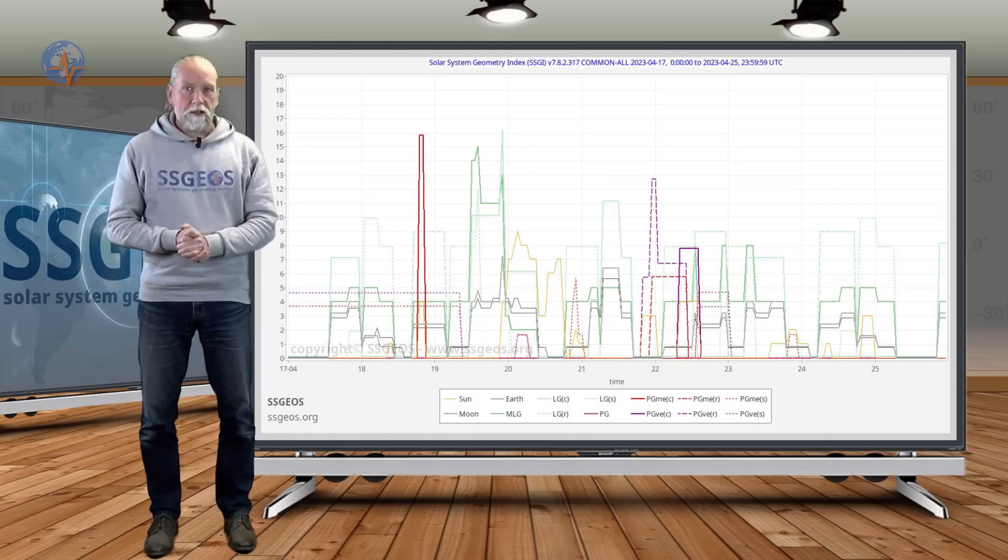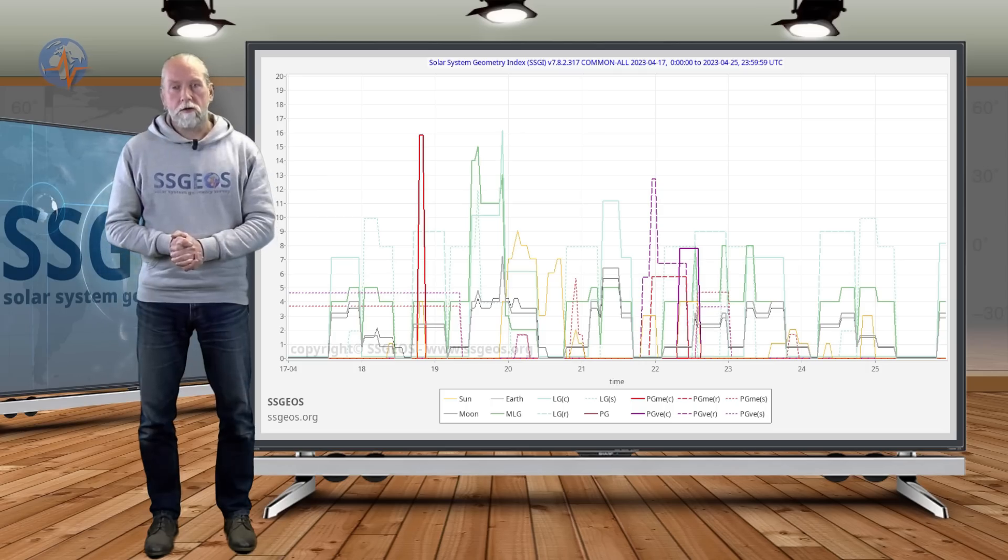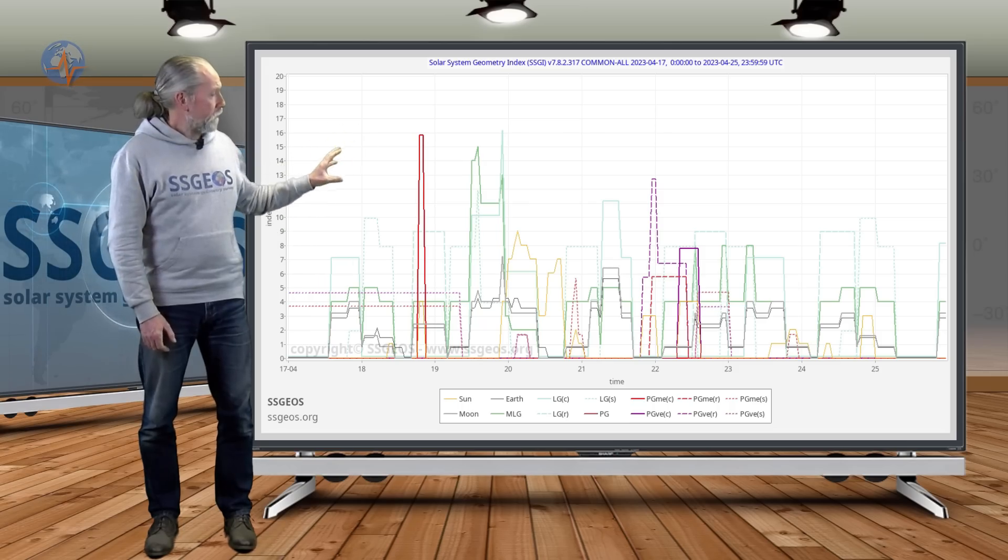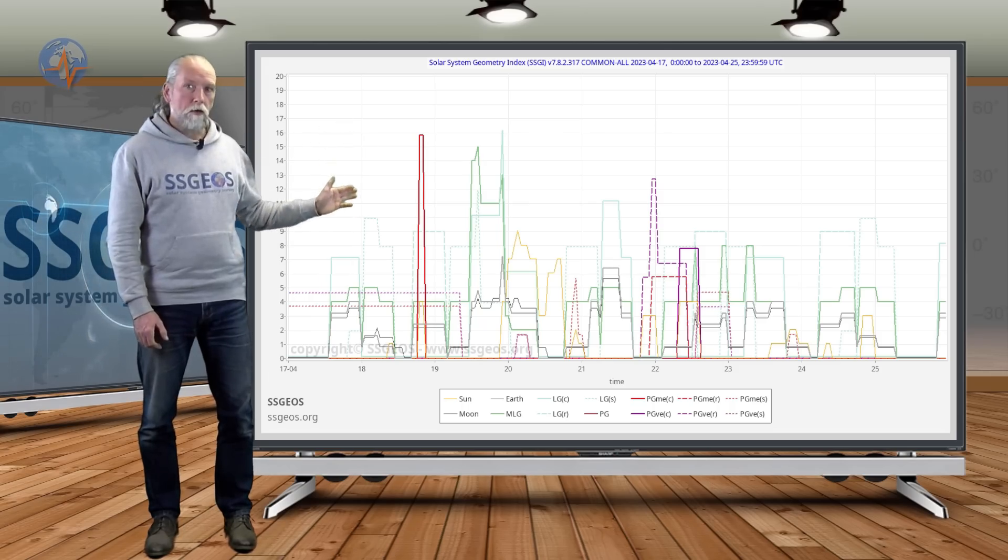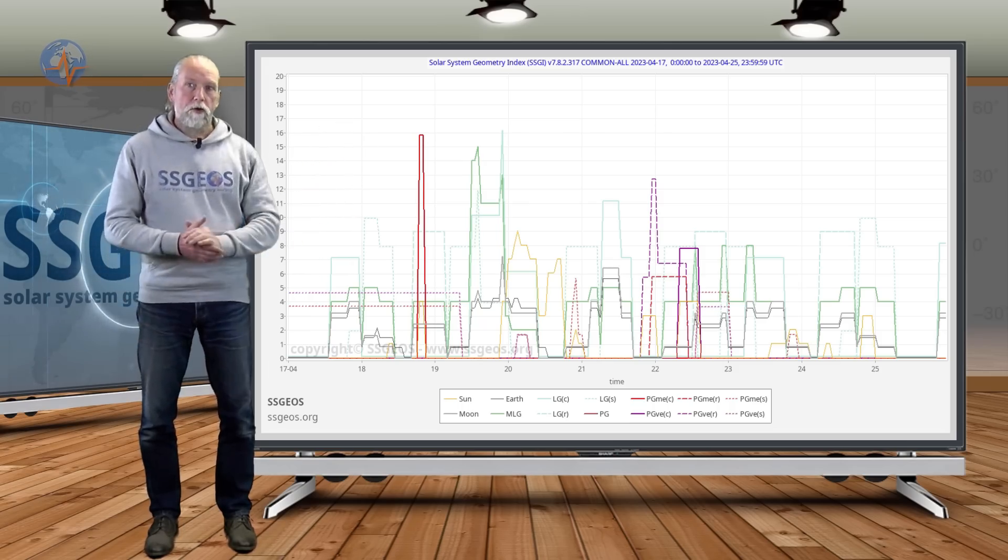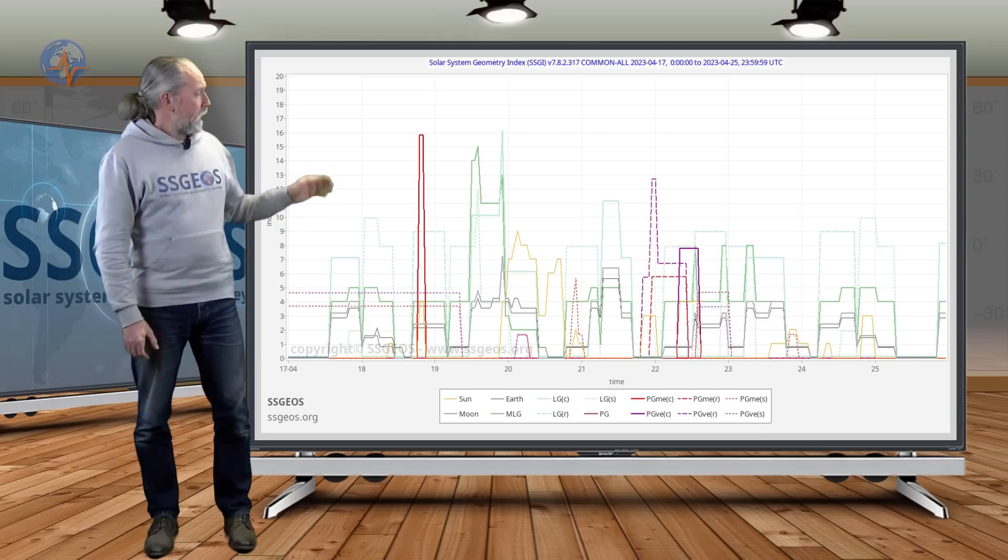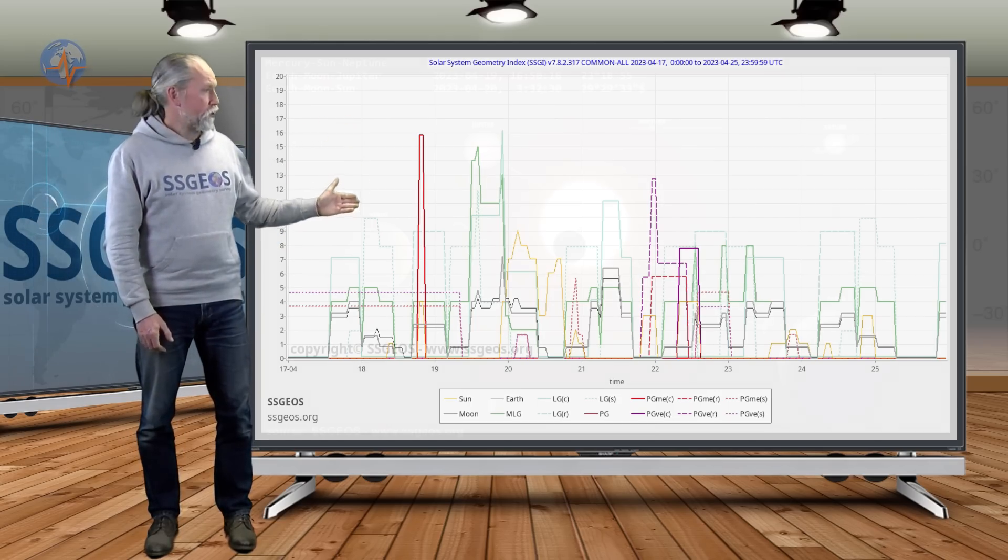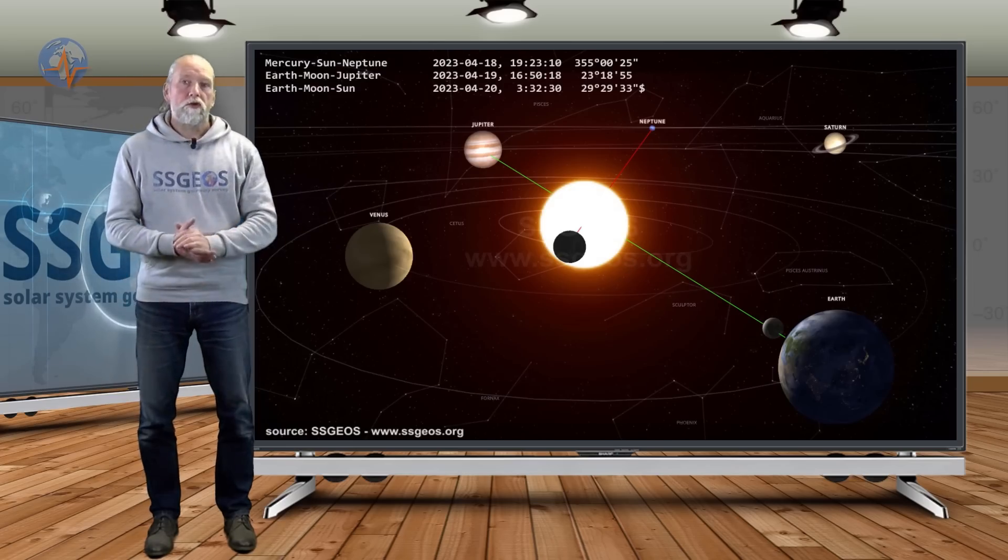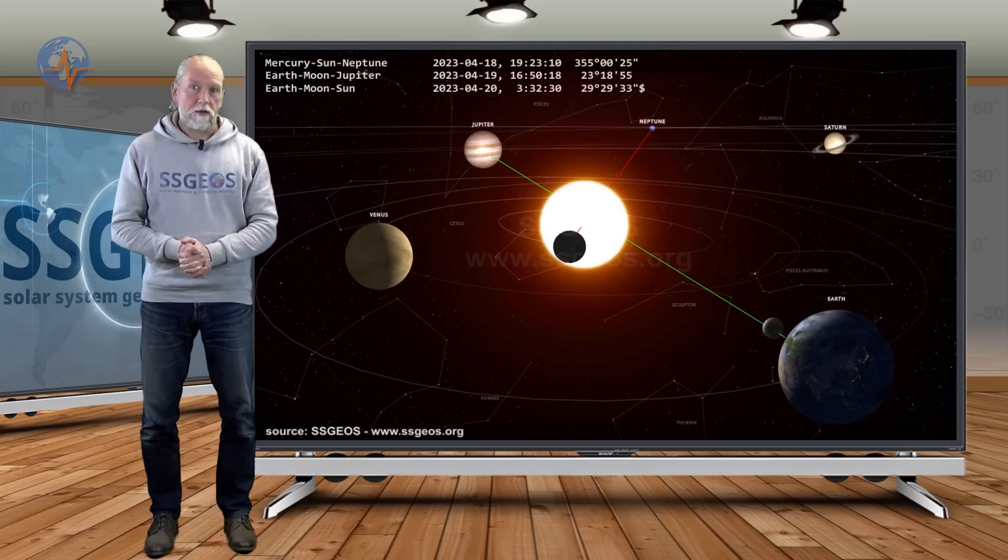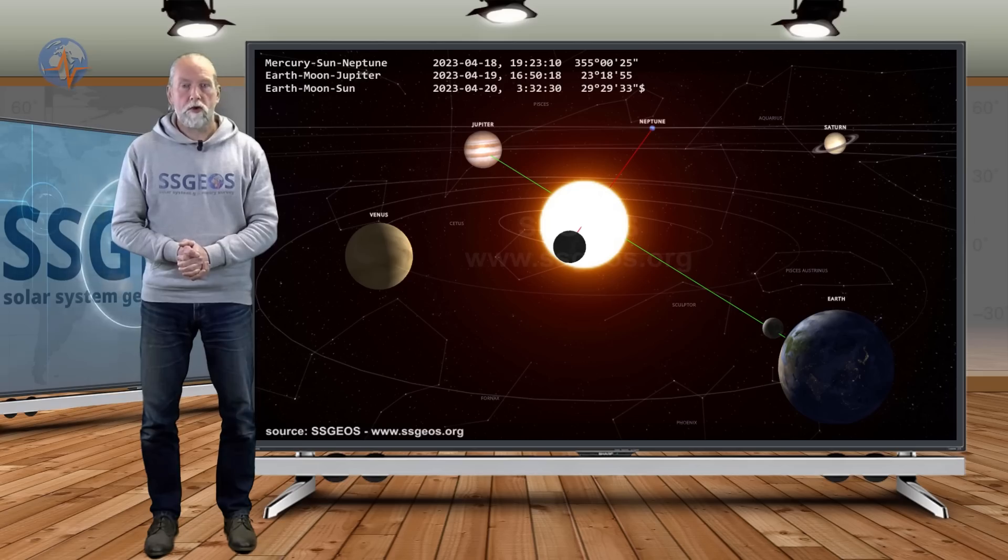First, let's have a look at what the planetary and lunar geometry is going to look like in the coming days. Tomorrow we have one planetary conjunction. On the SGI graph we see a high red peak preceding a high lunar peak. The red peak is Mercury, Sun and Neptune in conjunction. There's no convergence, it's a single conjunction, so on its own I do not expect it to do much. But we're going to have lunar geometry following that planetary conjunction, and that will be a conjunction with Jupiter followed by a new moon, a lunar conjunction with the Sun. That combination can result in some stronger seismic activity, potentially mid-6, maybe higher 6 magnitude.